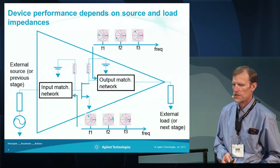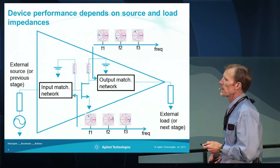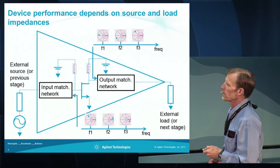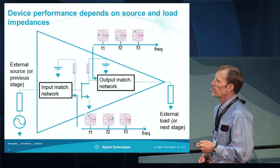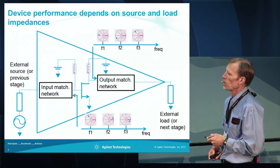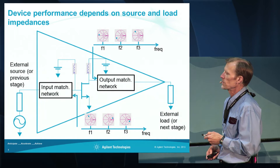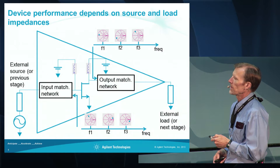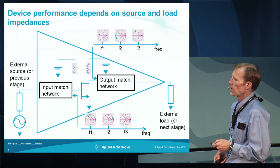First I'll talk about what load-pull is and why do it. If you're designing a power amplifier, you're probably using a non-linear device, a FET for example. A big part of the design process is determining what impedances to present to the output as the load and the input as the source, at the fundamental, second, and third harmonics for both the load and the source.